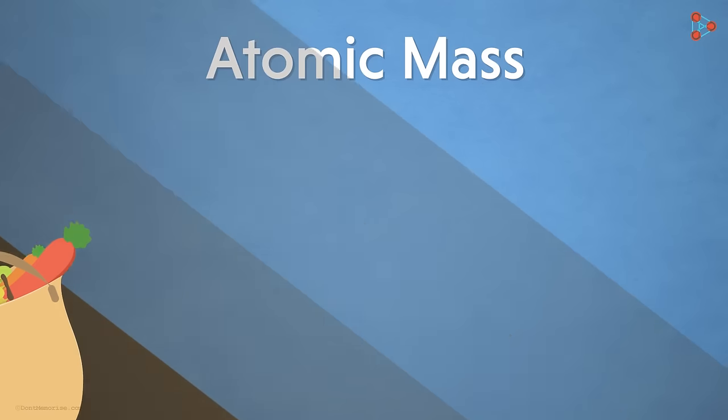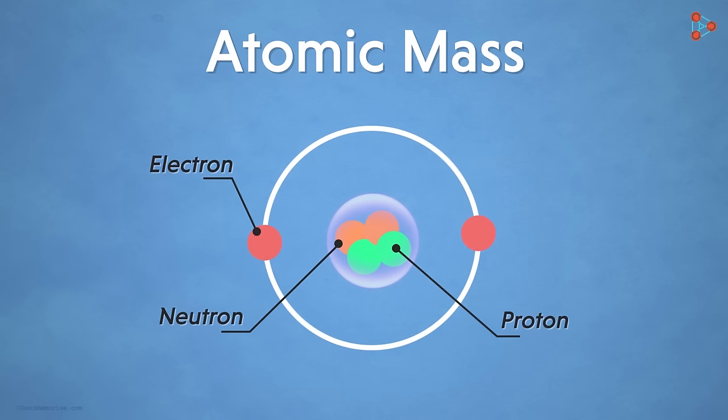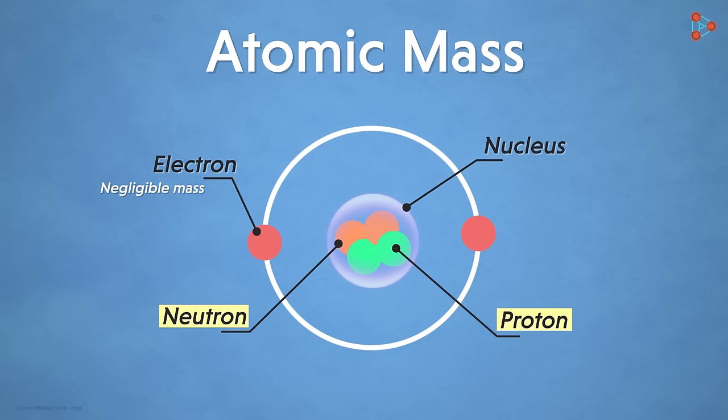Similarly, the mass of an atom can be calculated with the help of the subatomic particles in it. But we know that among all the subatomic particles, electrons have negligible mass. That is, they are considered to be almost weightless. So what are we left with? Yes, we have both protons and neutrons in the nucleus, and these two do have some amount of mass.